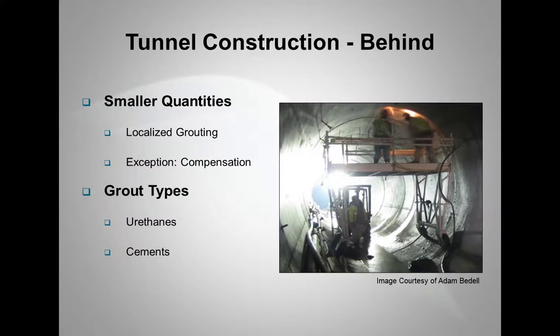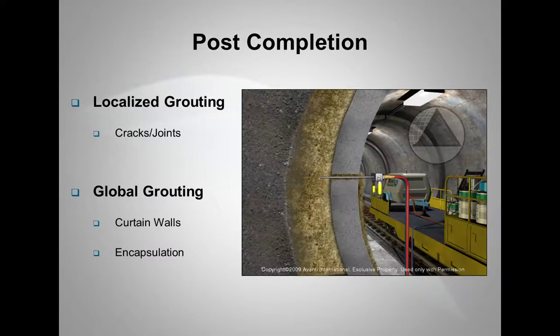Now, behind the tunnel, the TBM, generally, these are smaller quantities, what I would consider more localized grouting, where they're focusing predominantly on the joints or the cracks or pick holes. In those situations, they're going to predominantly use urethanes. There is an exception where they maybe do compensation grouting or modified contact grouting, where they're using cement to help control groundwater inflows out into the soil mass around the rock or around the tunnel.